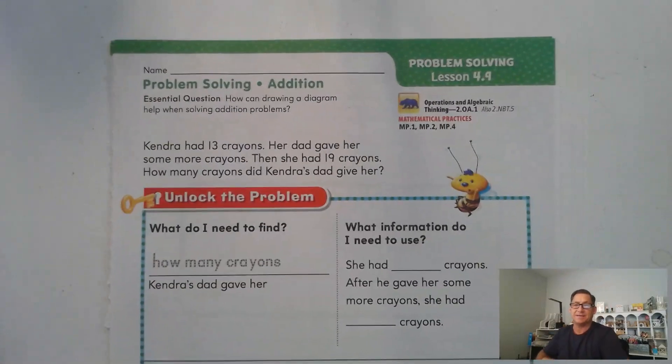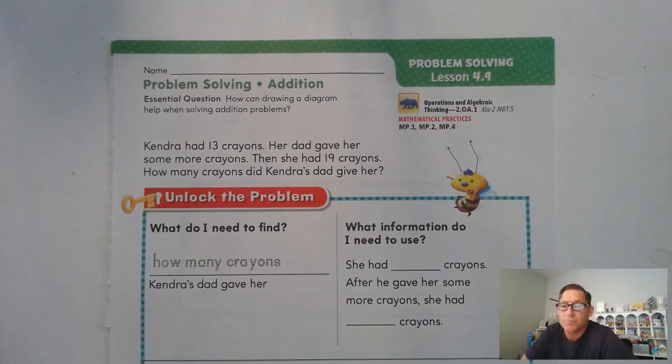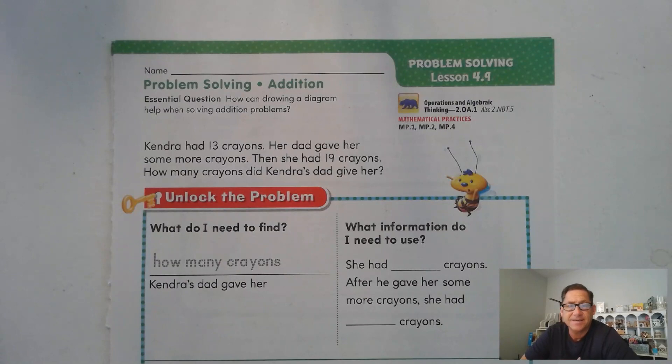Hello everybody, in today's lesson, lesson 4.9, we're going to work with problem solving and we're on page 205 of the second grade GoMath textbook. Our essential question that you should be able to explain when we're finished with today's lesson is how can drawing a diagram help when solving addition problems? For the most part, the diagram we're going to use today is the bar models that we practiced in earlier lessons.